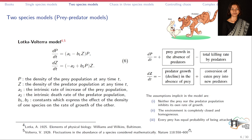There are a few assumptions in this model: first, neither the prey nor the predator population inhibits its own rate of growth; second, the environment is completely closed and homogeneous; and third, every prey has equal probability of being attacked, meaning all prey individuals are equally exposed to predation.